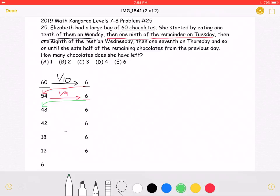Then, the problem states that she eats one-eighth of the rest on Wednesday. So if she eats one-eighth of the 48 chocolates, she will be eating six chocolates. And subtracting six from 48, she will have 42 chocolates left.